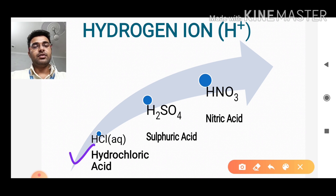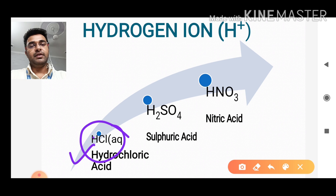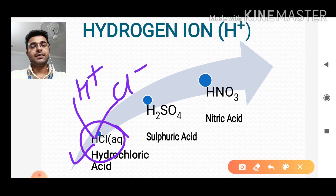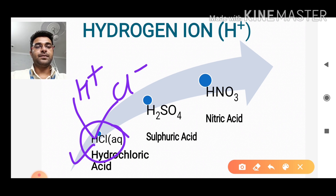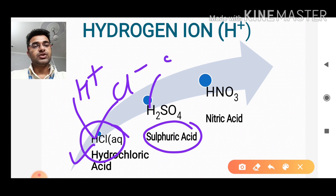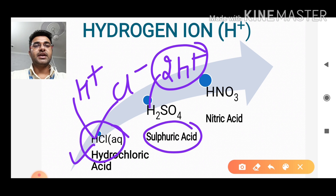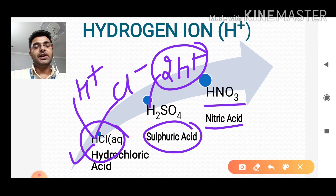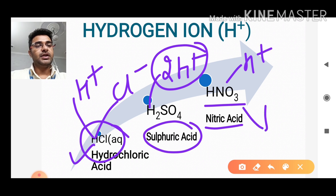If we take the example of hydrochloric acid HCl, then we will identify H⁺ and Cl⁻ — it means hydrogen ion is common in hydrochloric acid. If we talk about sulfuric acid, then we will get 2H⁺ and SO₄²⁻, meaning hydrogen ion is present there. Similarly, in nitric acid we have H⁺ and NO₃⁻.